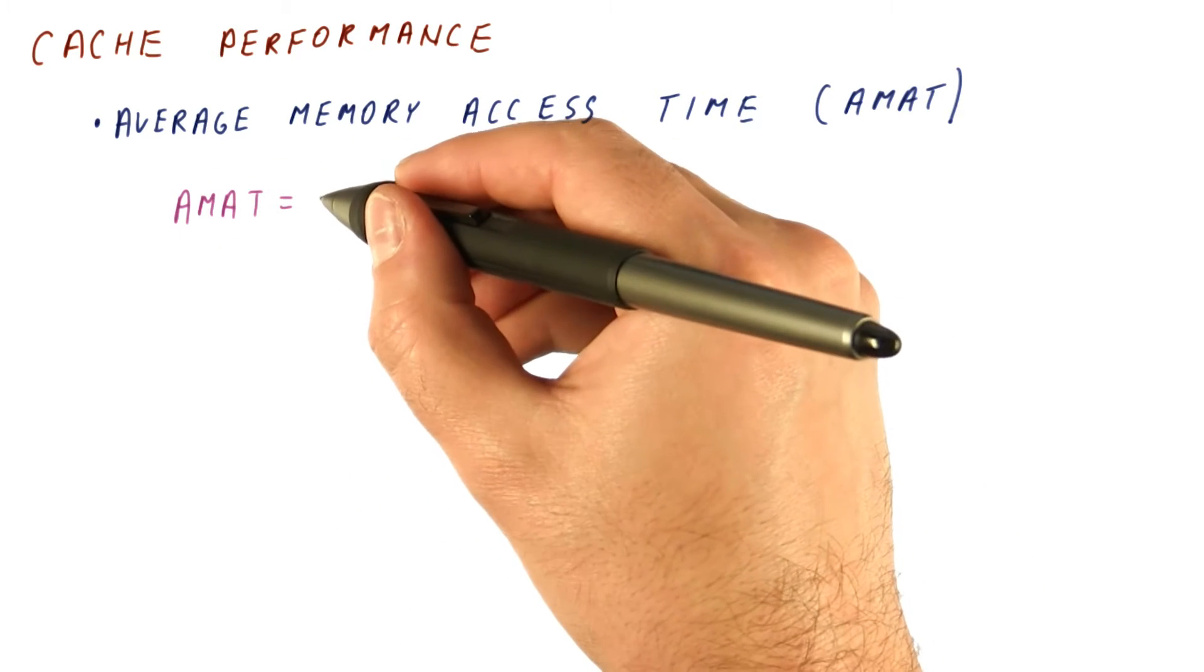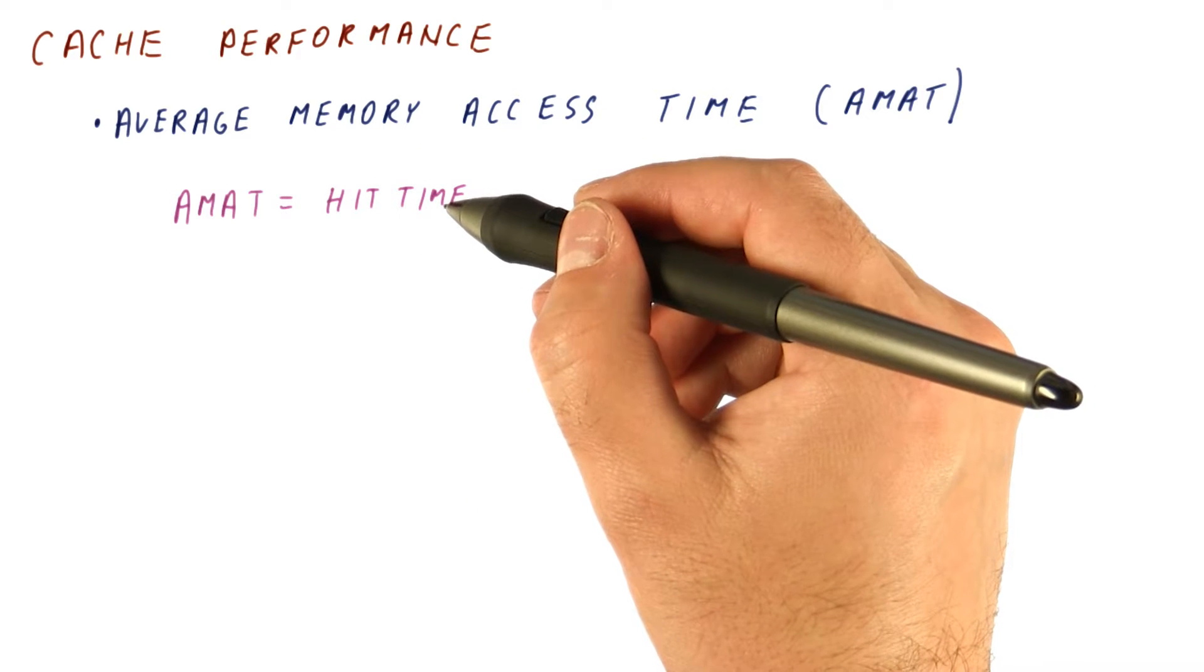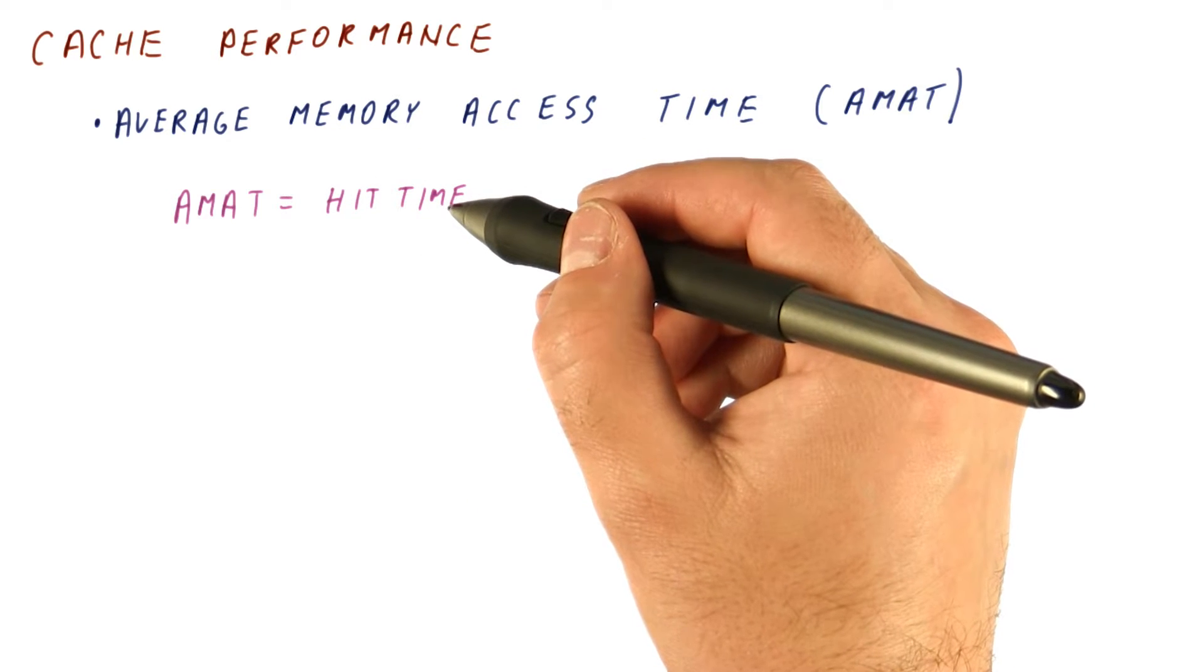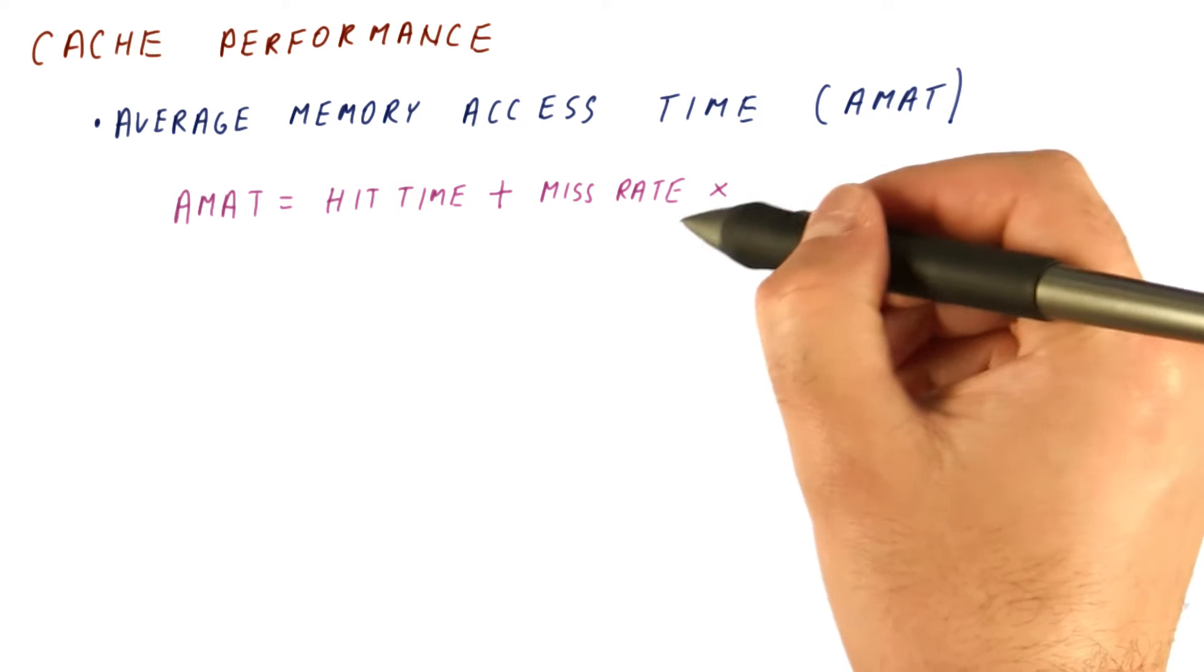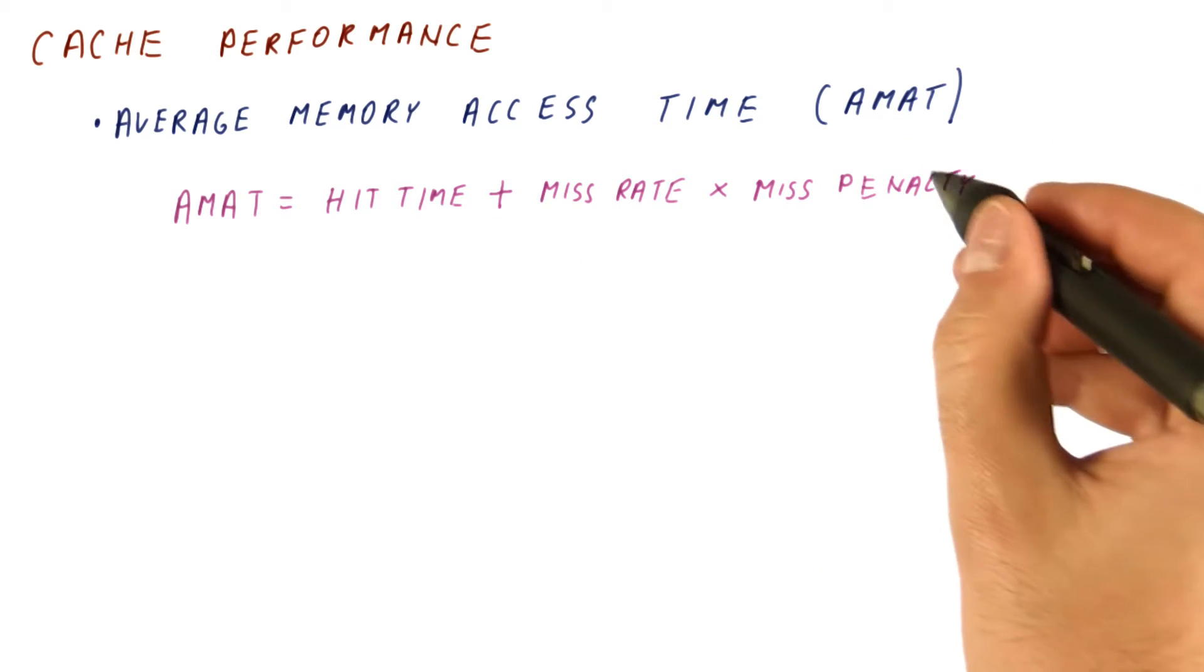The AMAT is equal to the cache's hit time. How quickly can it return the data when we do have a cache hit? Plus, how often do we have a miss, times the miss penalty.